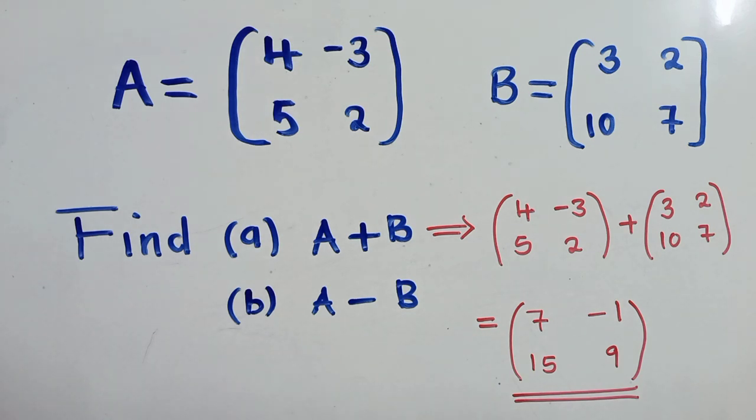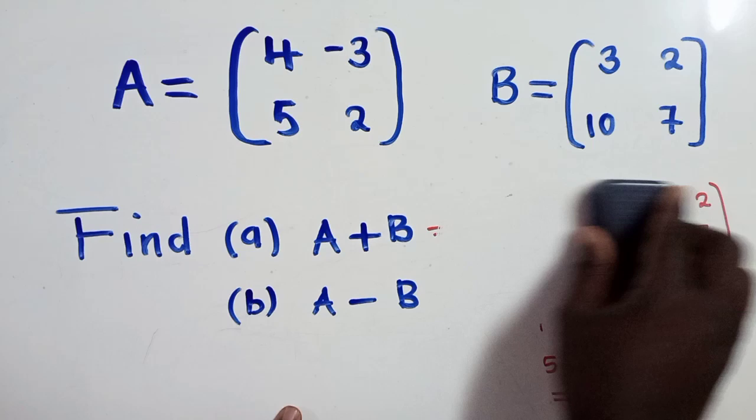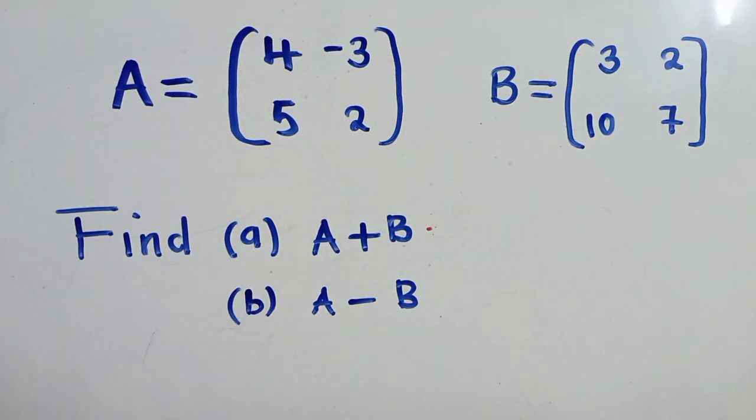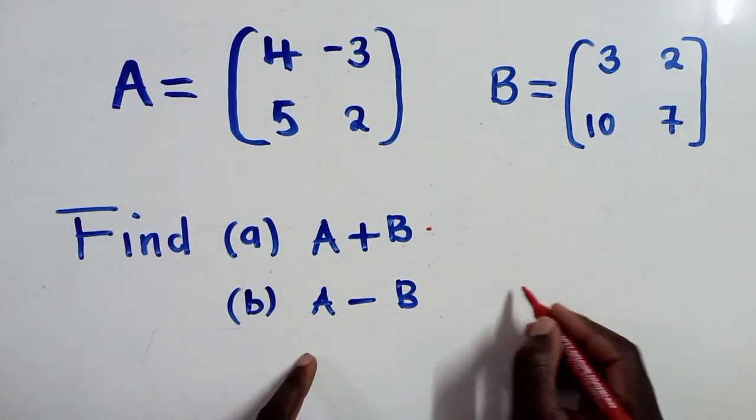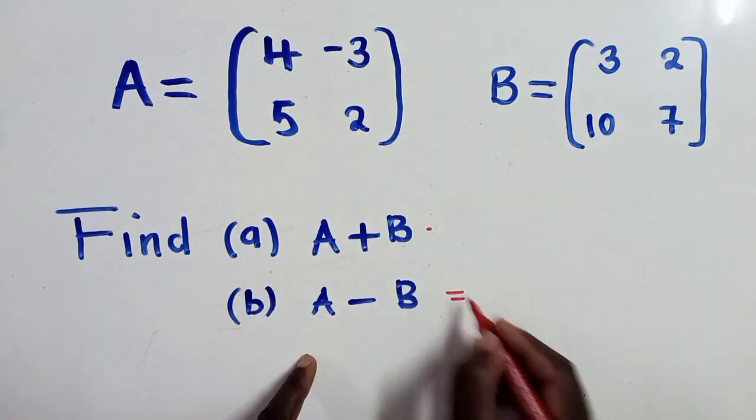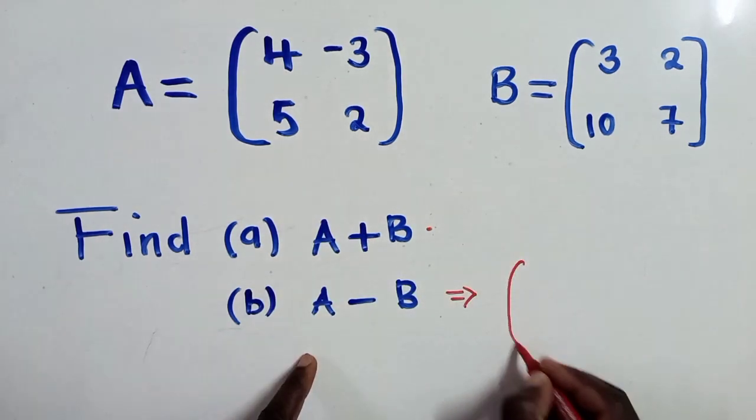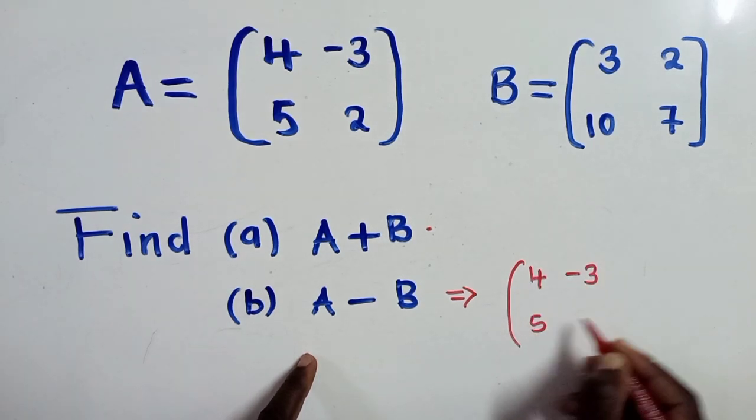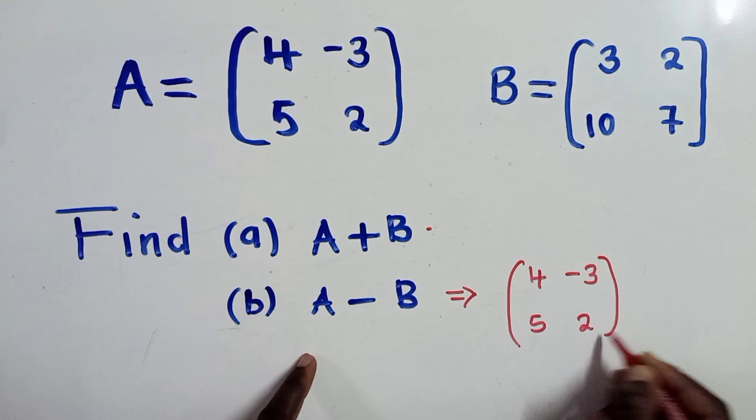So let's try to do question B. So for question B, it's minus. So we're going to get our A. So what is our A here? Our A, of course, is a 4 there, minus 3, 5 there, a 2 there. Then we close.